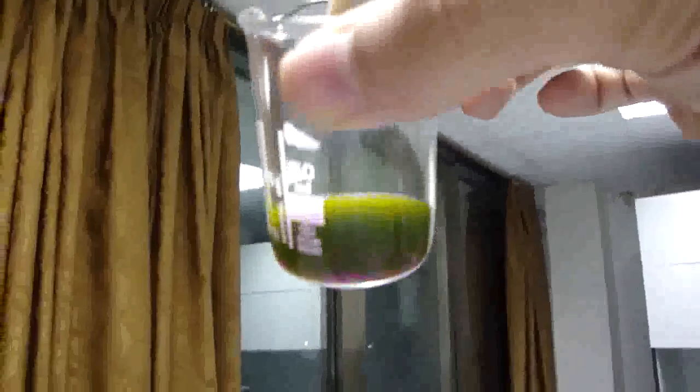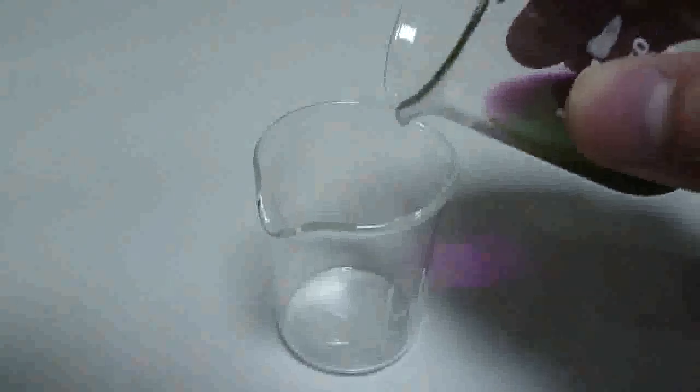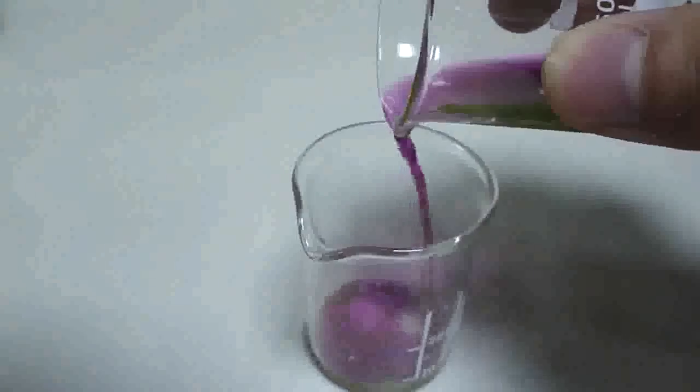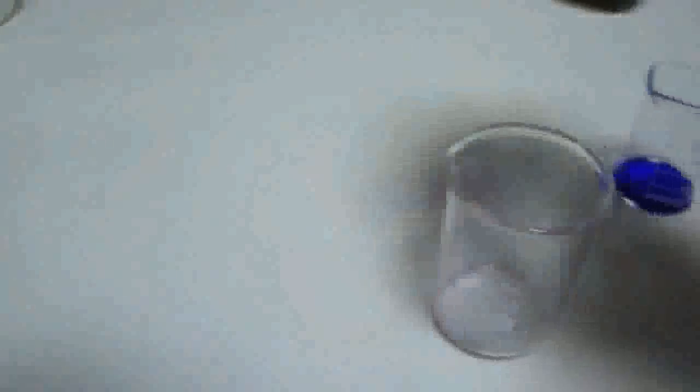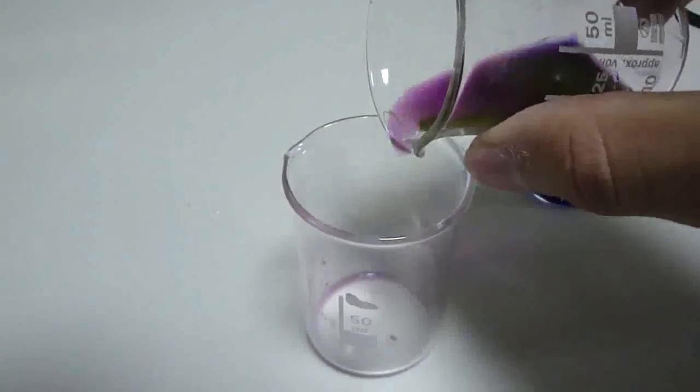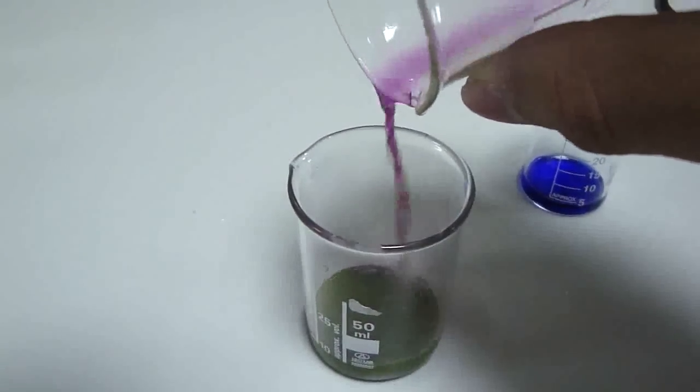So as you can see, violet and green. And when I pour it to another bigger beaker, we can see it has two colors. Violet, and it will become green when it's condensed. And again, violet and green.